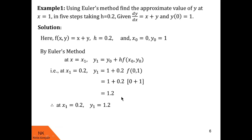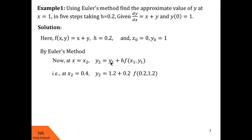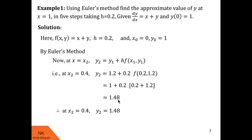Now we calculate y at x2. By Euler's method, y2 = y1 + h·f(x1, y1). We have y1 = 1.2, and x2 = x1 + h = 0.2 + 0.2 = 0.4. So y2 = 1.2 + 0.2·f(0.2, 1.2). Substituting x = 0.2 and y = 1.2 into f gives f(0.2, 1.2) = 0.2 + 1.2 = 1.4. Therefore y2 = 1.2 + 0.2·1.4 = 1.2 + 0.28 = 1.48. So the value of y at x = 0.4 is 1.48.